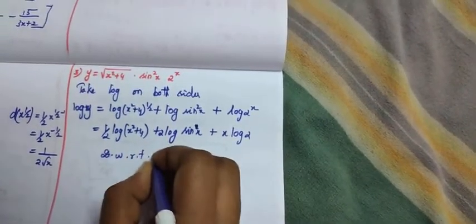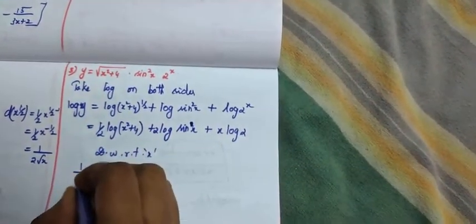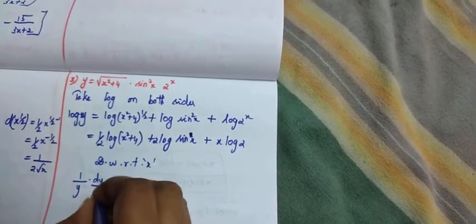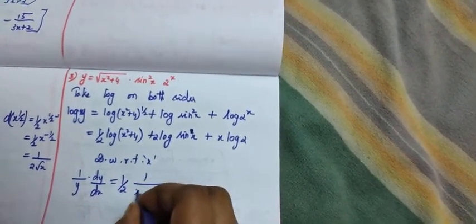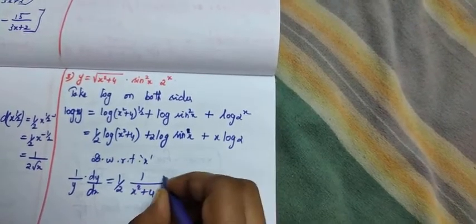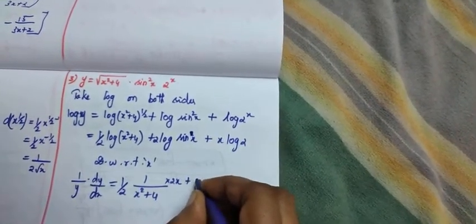So what is my answer? If we differentiate this with respect to x, 1 by y into dy by dx is equal to 1 by 2, 1 by 2 into log differentiation 1 by x squared plus 4. After x squared differentiate 2x plus...